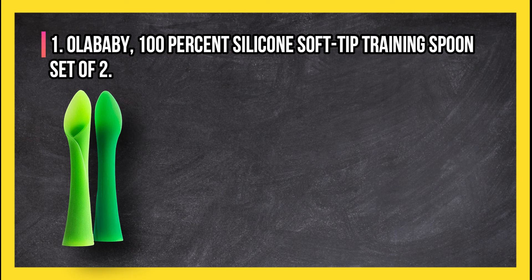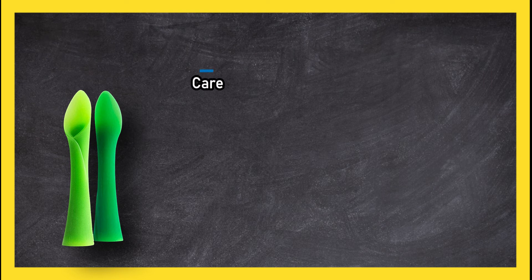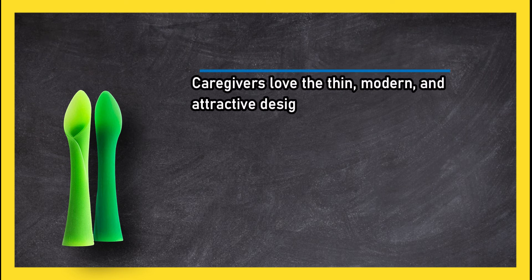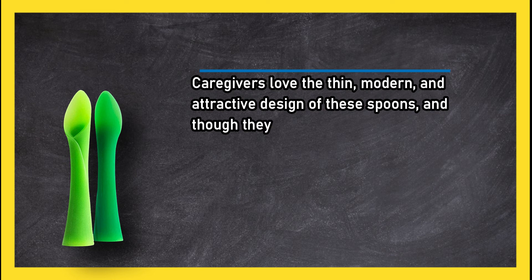At number one: Olababy 100% Silicone Soft Tip Training Spoon set of two. Caregivers love the thin, modern, and attractive design of these spoons, and though they are ideal for self-feeding, they also work for adults feeding younger babies as well.